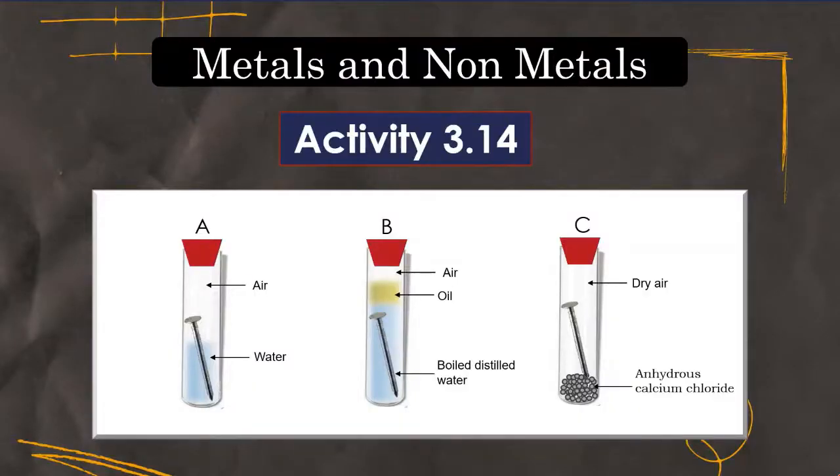Hello everyone, welcome back to my channel. In test tube A, both air and water are present. In test tube B, there is no air dissolved in the water. And in test tube C, the air is dry. Do you know which of these conditions under which iron rusts? To investigate this, we will perform an activity.